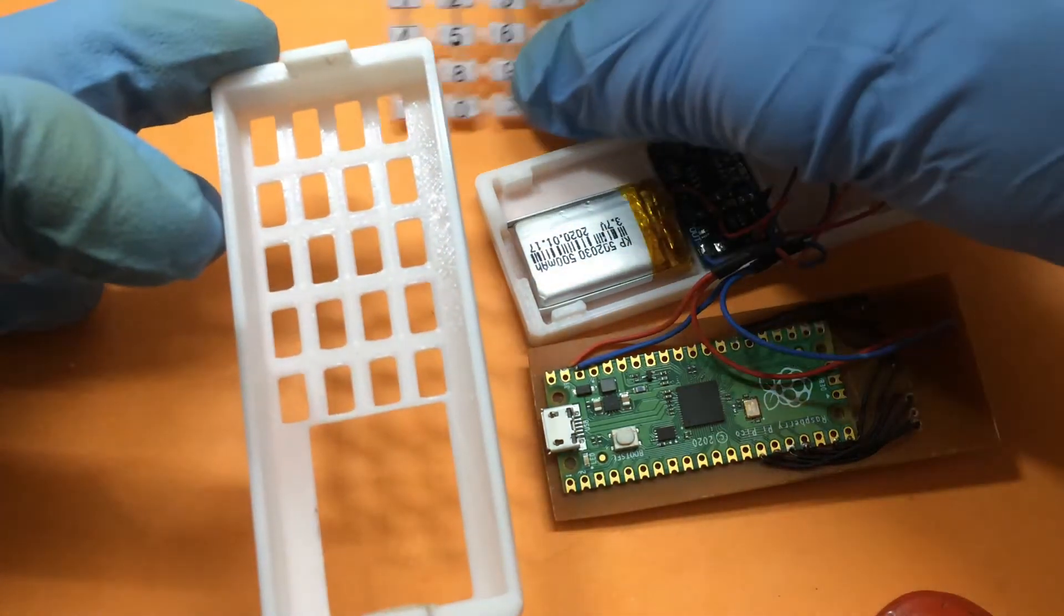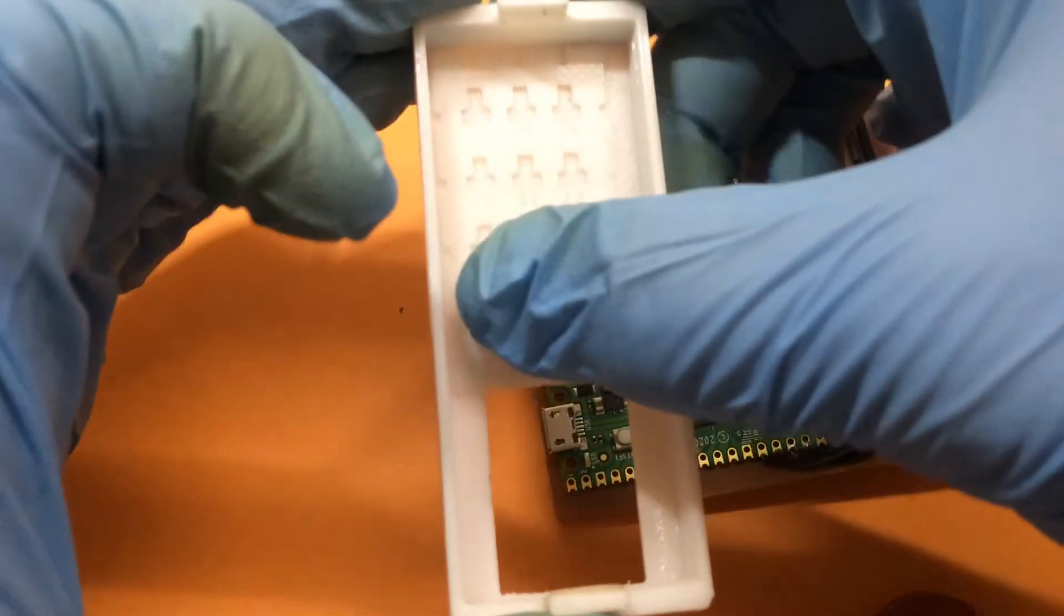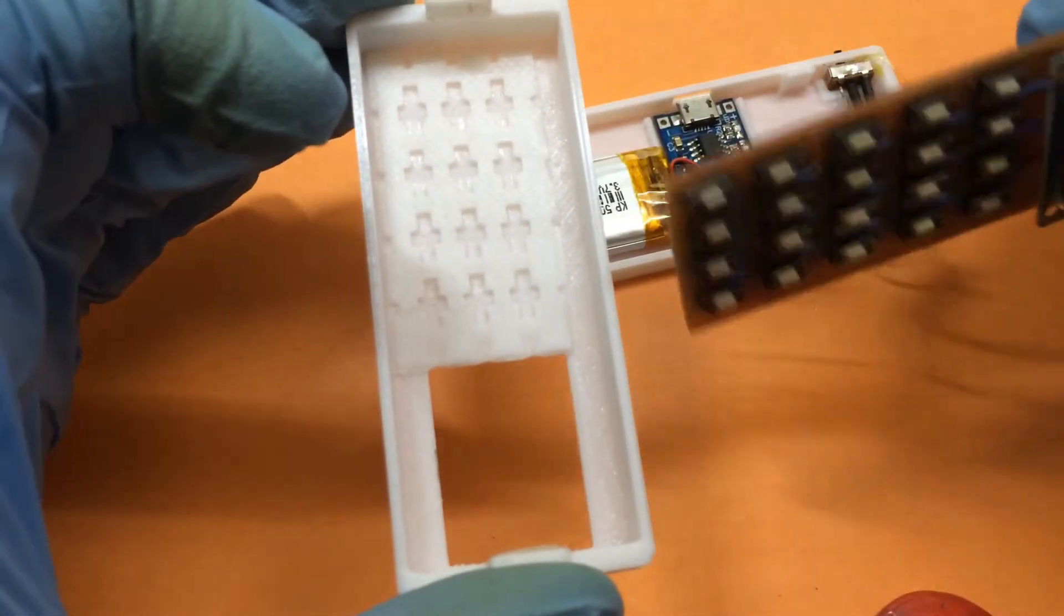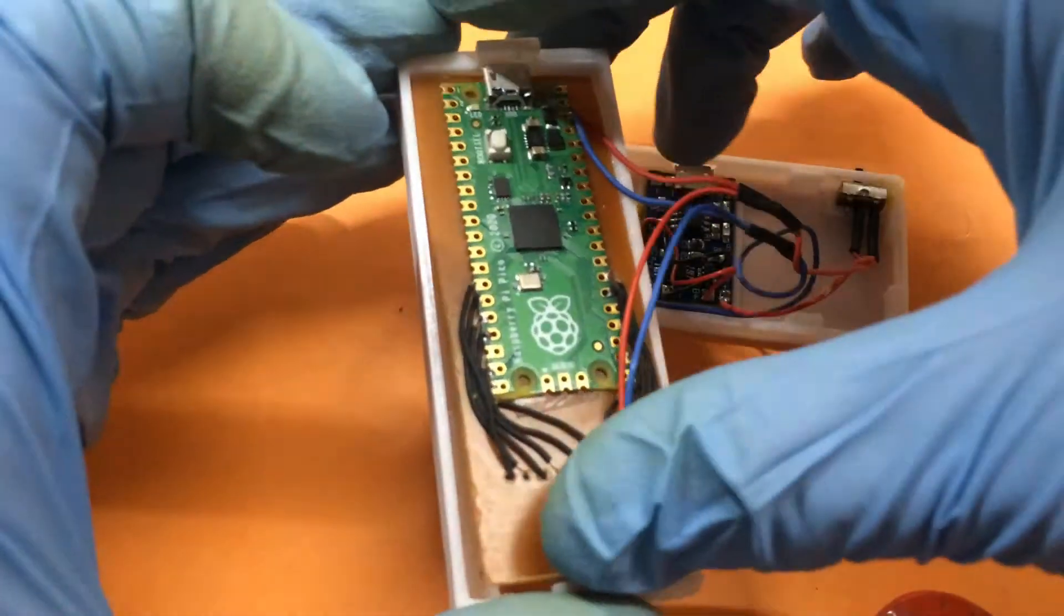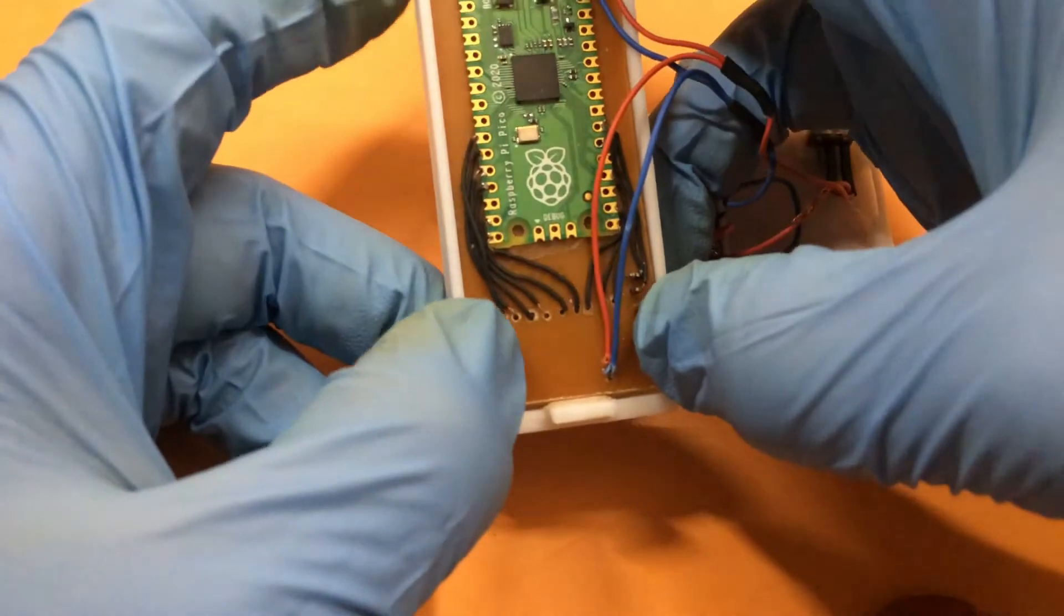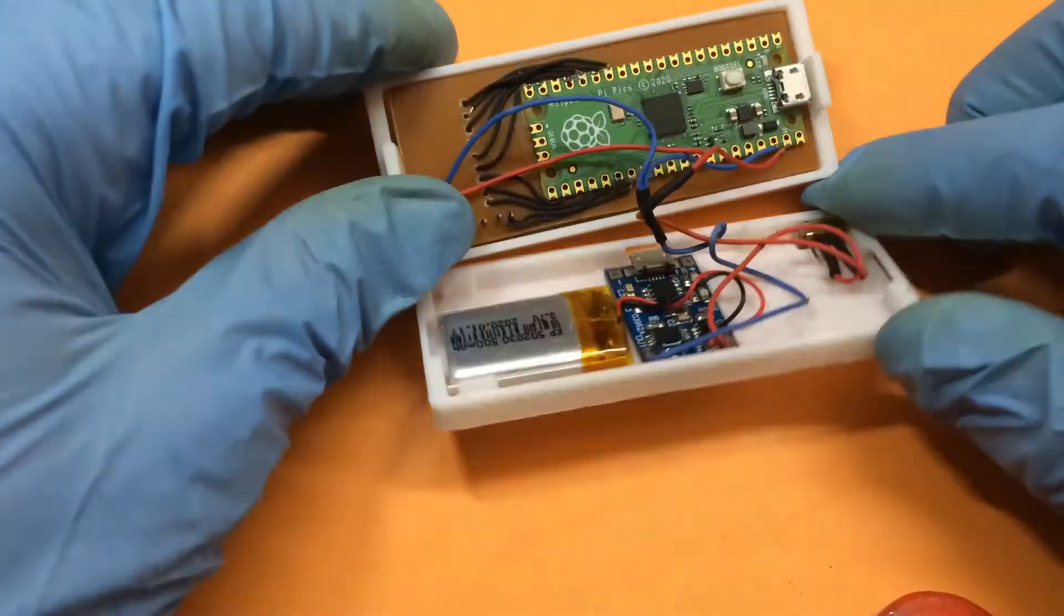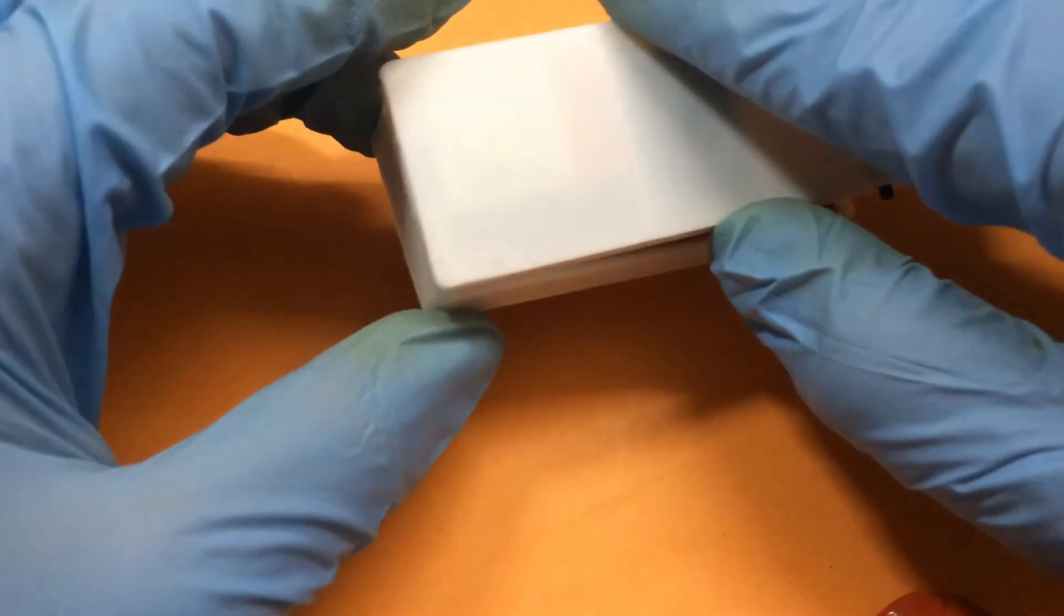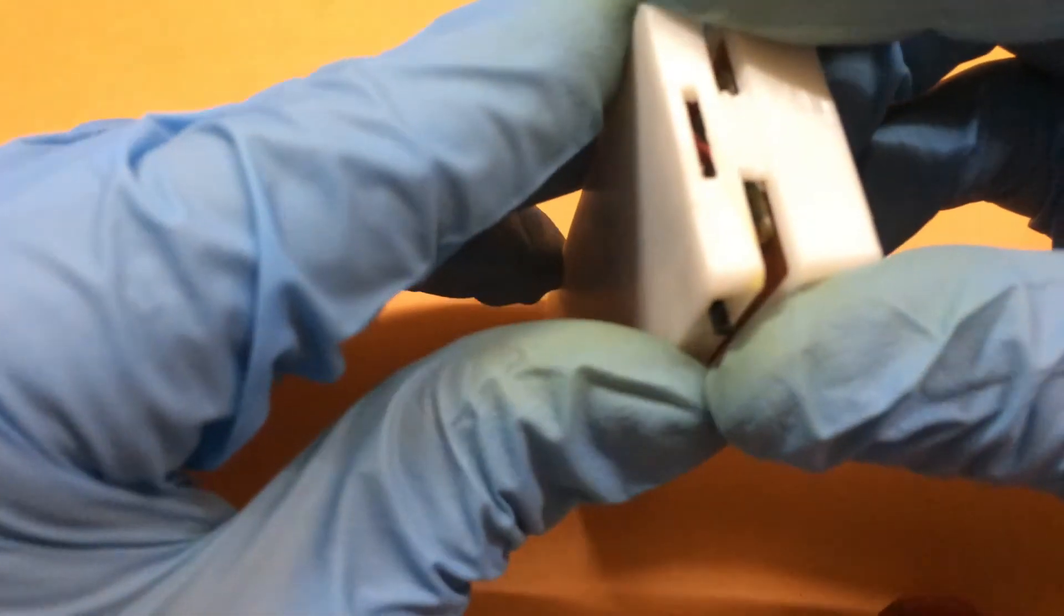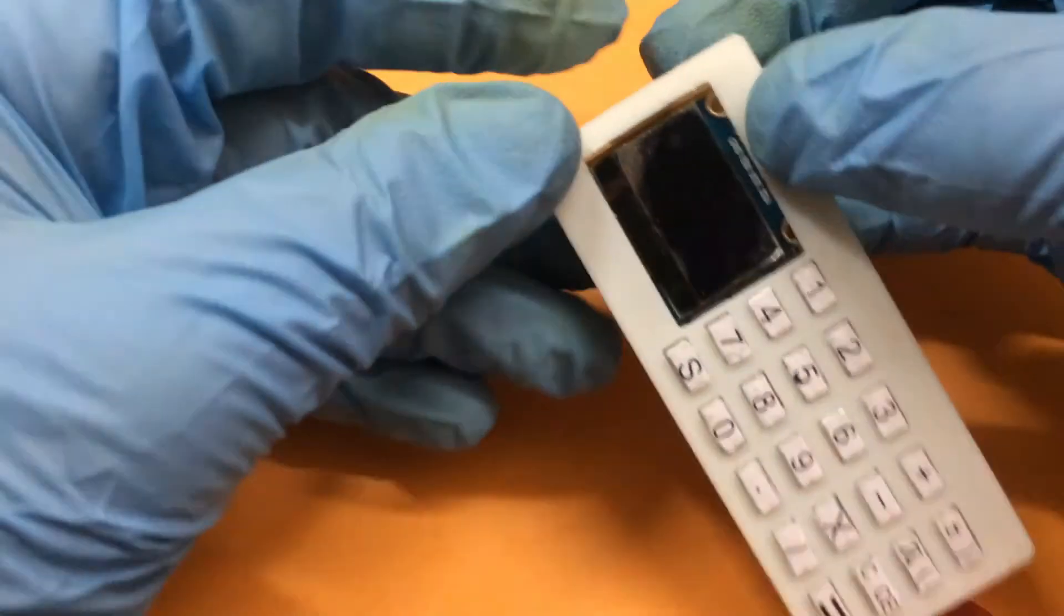After that insert the keypad into the grid made for it in the top part. And next comes the PCB we made. The design is made with indents on both the sides and it will snap fit without any requirements of screw or nut board.